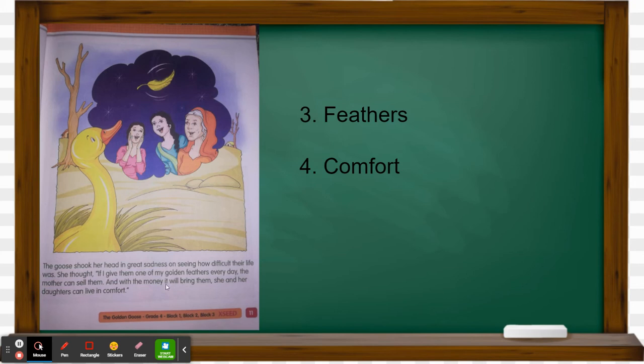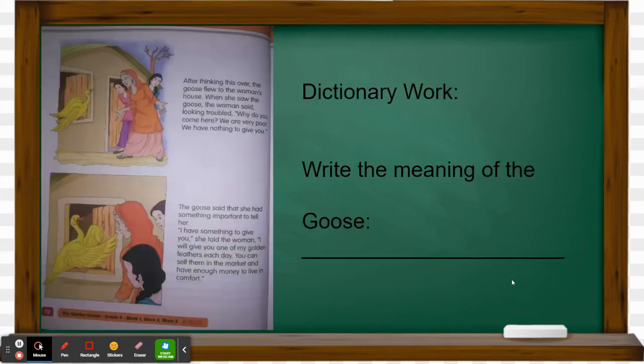Underline the words 'feathers' and 'comfort.' Now turn to the next page. When the golden goose approached, the old woman and her daughters were frightened. They thought it was going to trouble them and they were shooing the goose away.